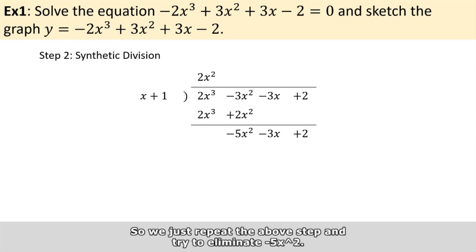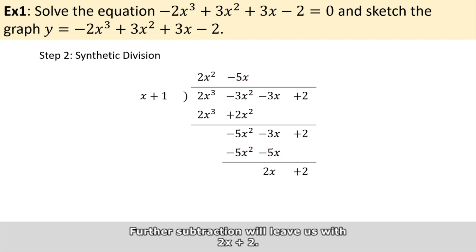Now we repeat the above step and try to eliminate -5x². To do this, we need to multiply x plus one by -5x, which produces -5x² - 5x. Further subtraction will leave us with 2x + 2.